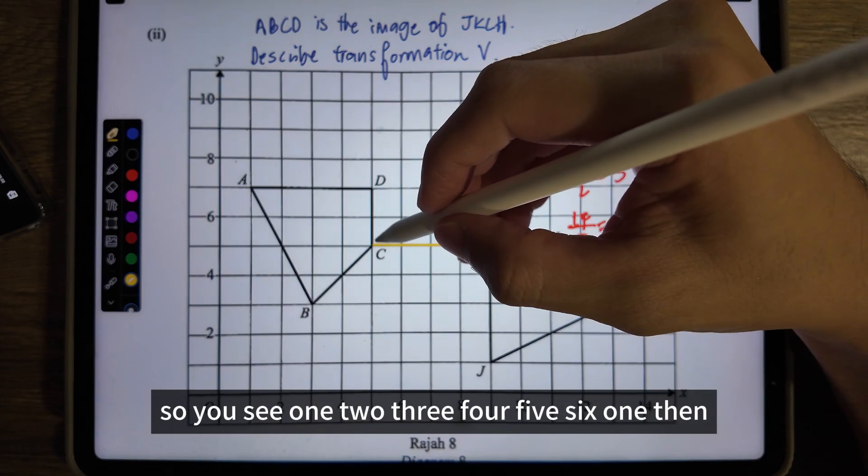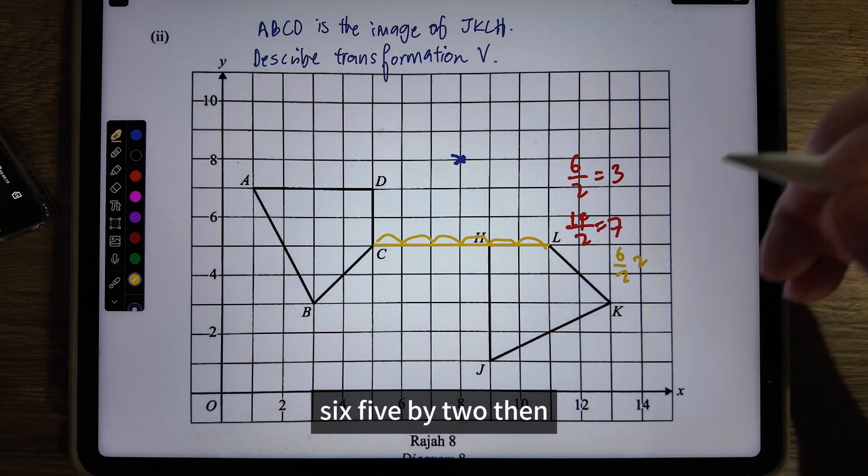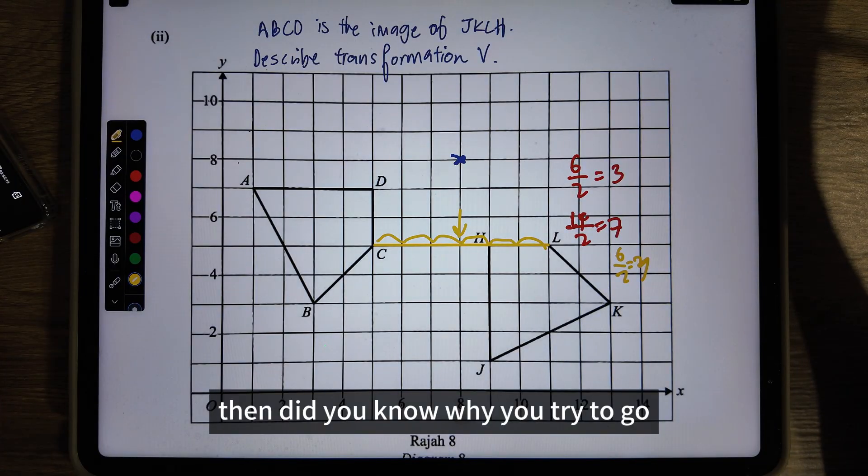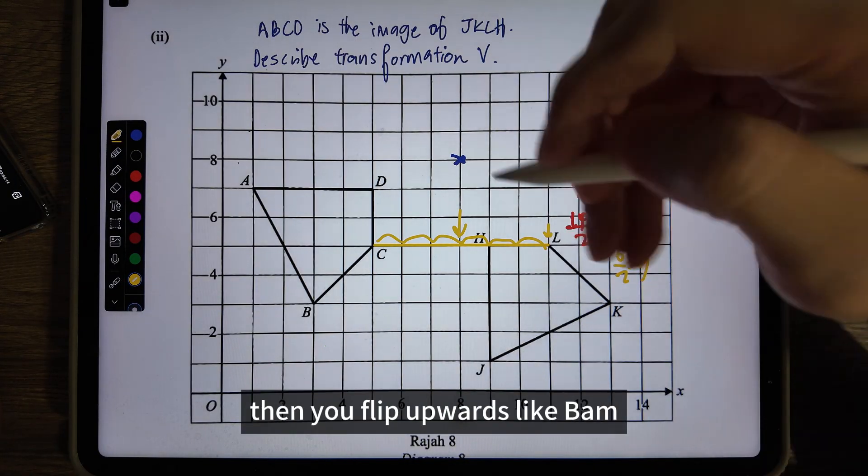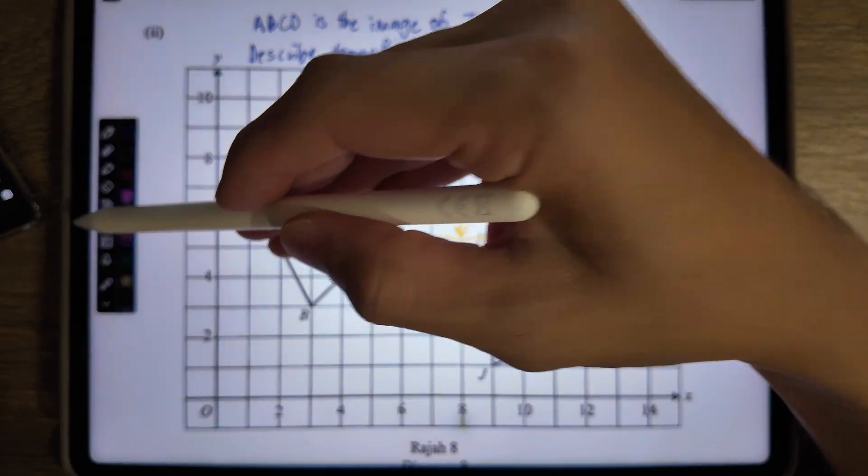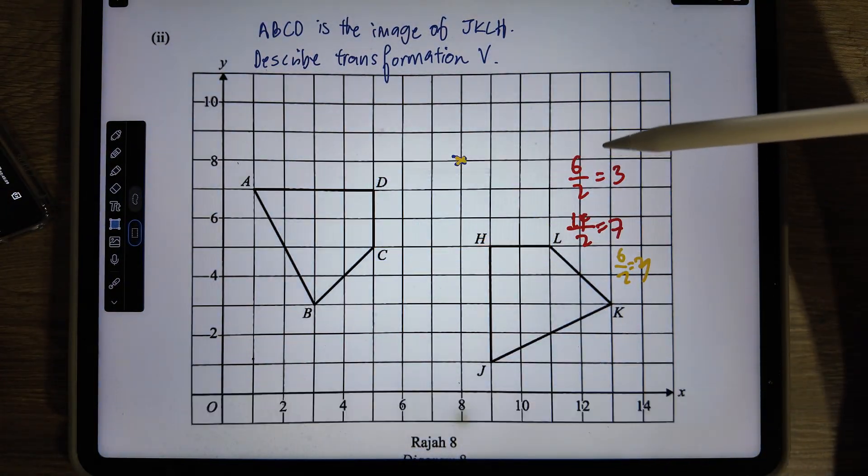So you see: one, two, three, four, five, six. Then six divided by two - you get three. Three is here. Now try, go. You go to this, then you flip upwards. Oh my gosh, you hit the same point everybody! Then I said to myself again, 'I don't believe it.' I try again.